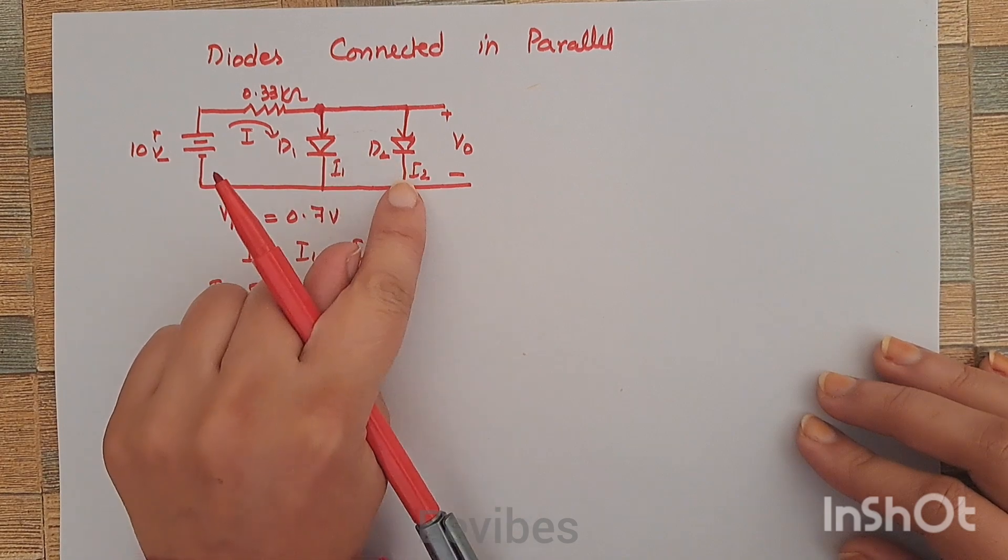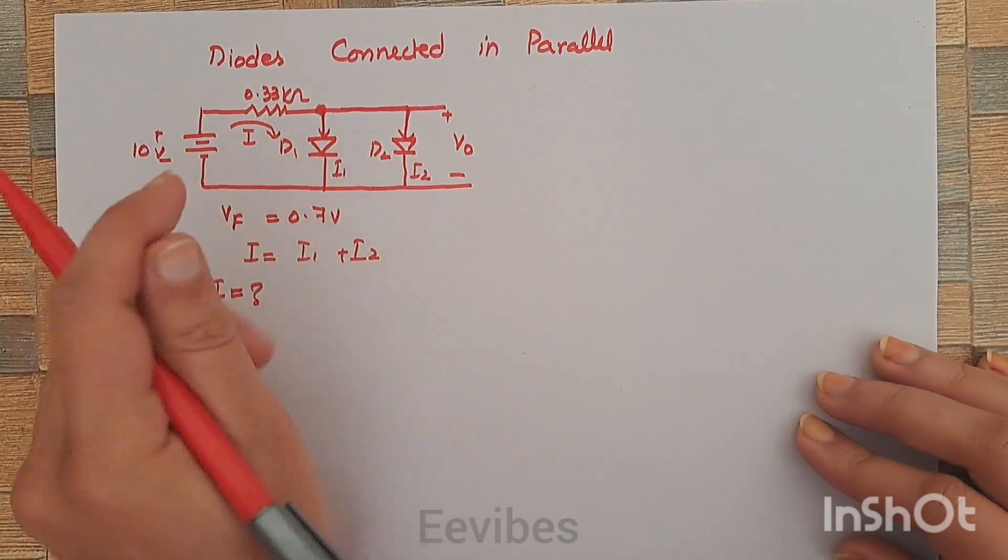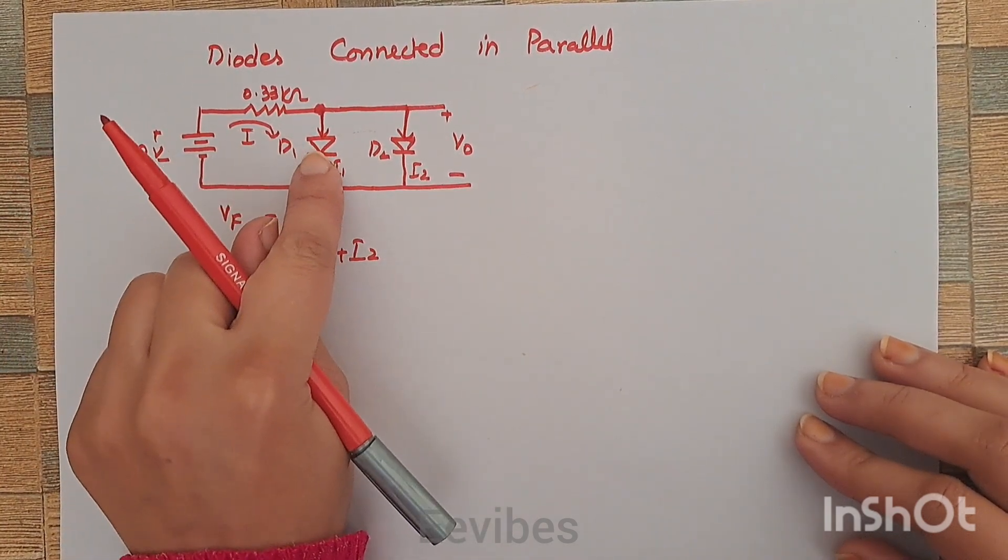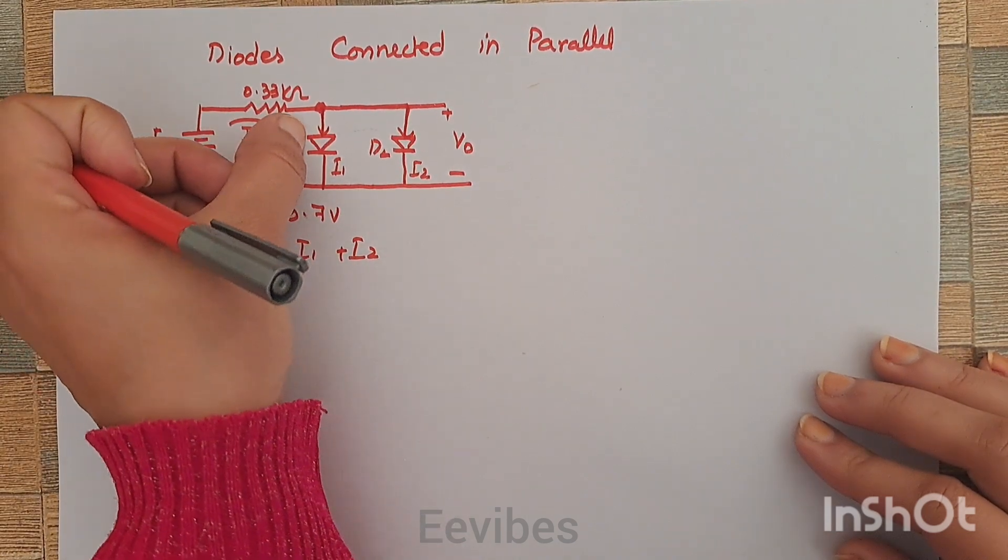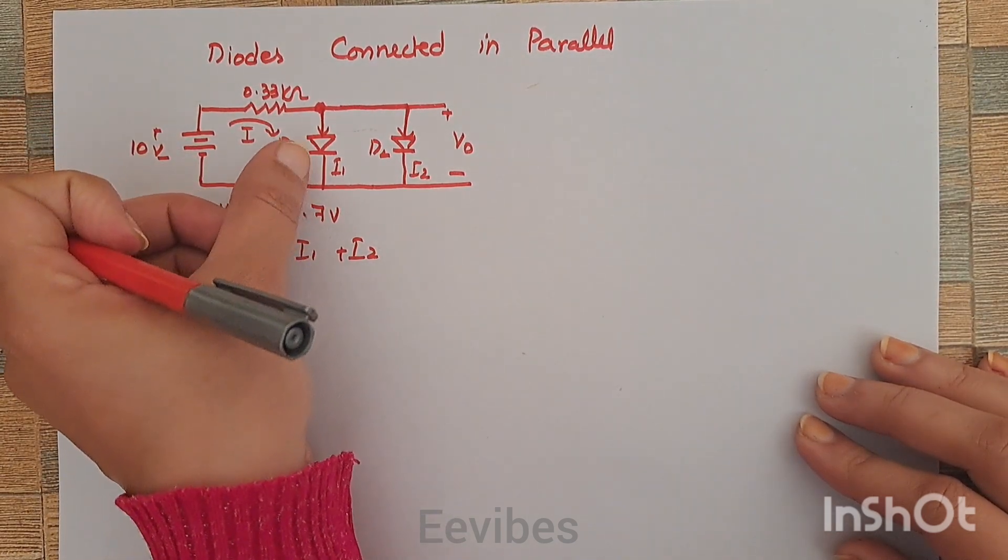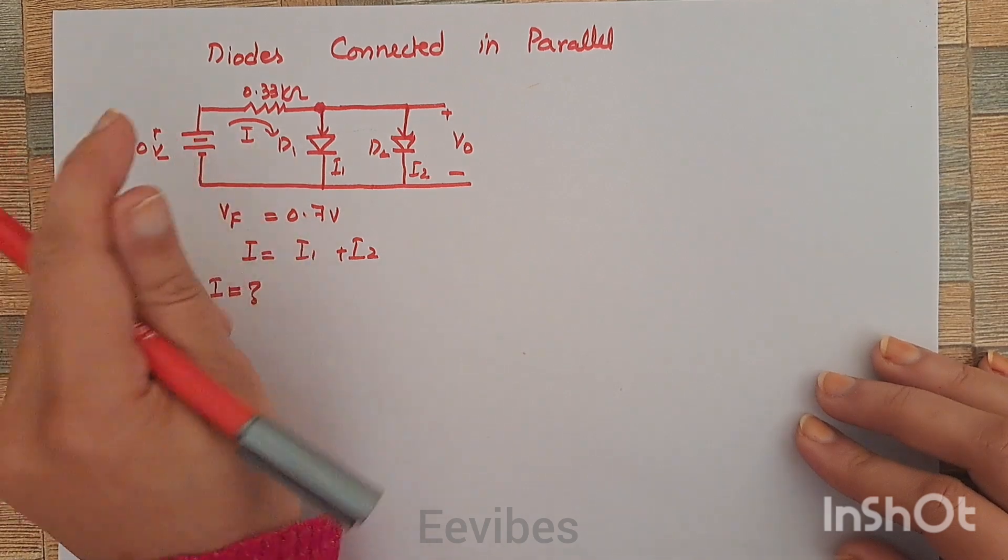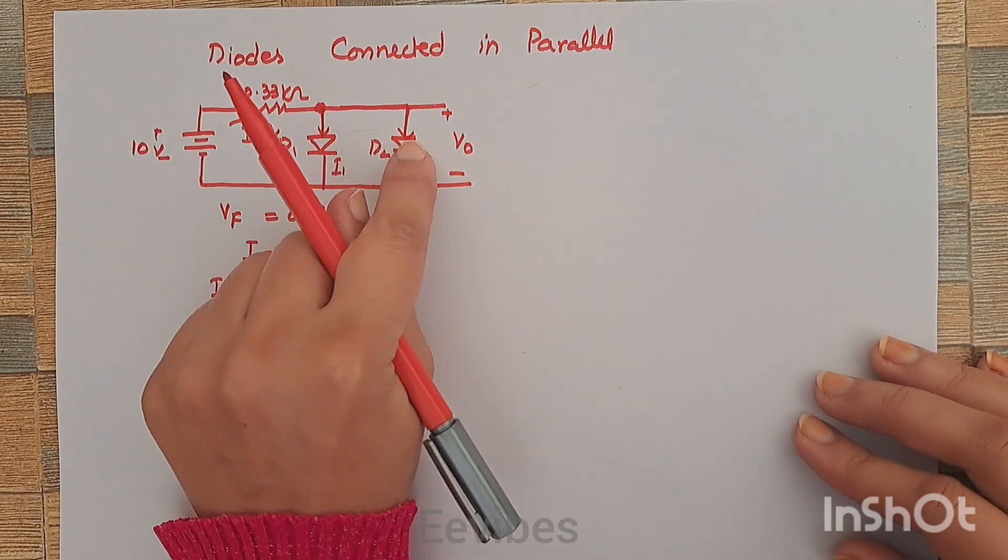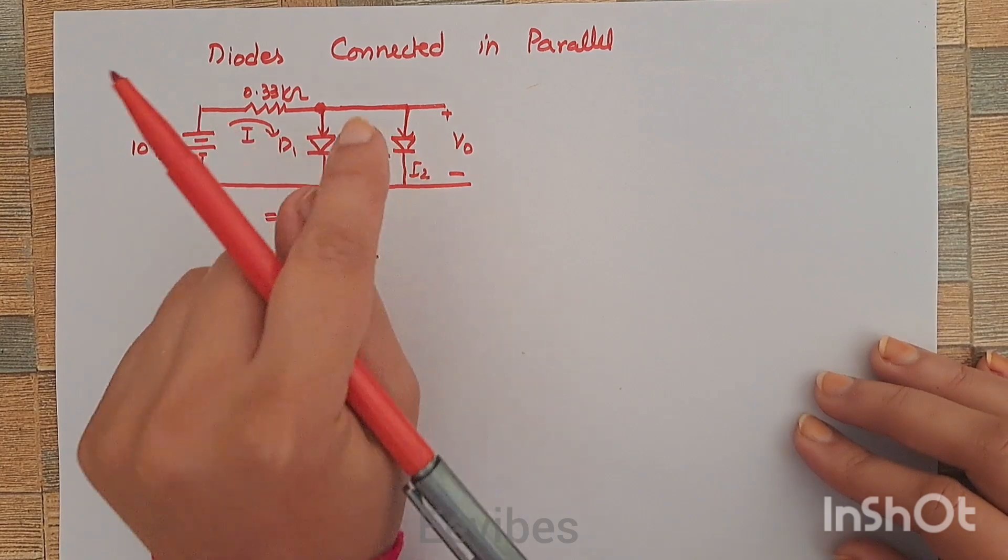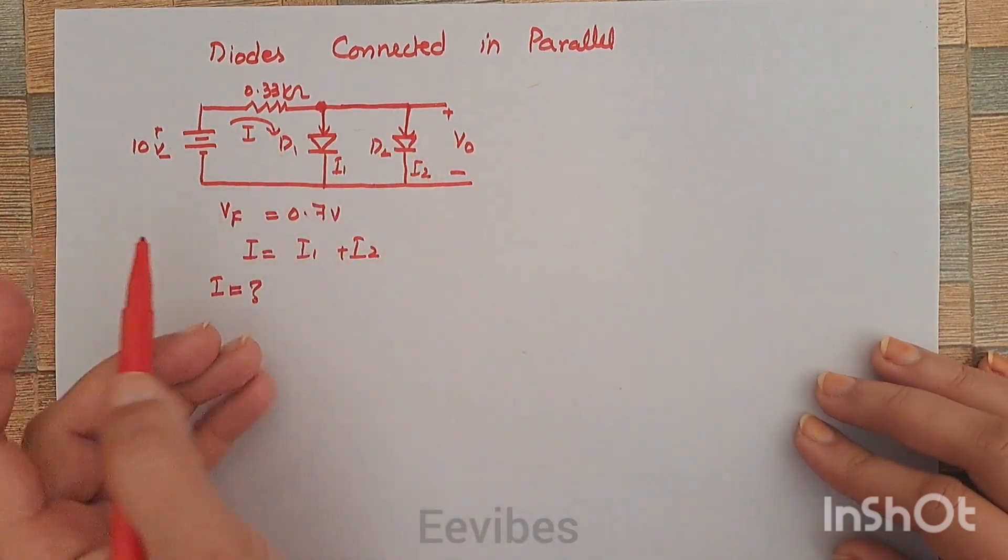Before that, we need to make sure or check which of these diodes is forward biased. The general rule of conduction for a diode is that the anode should always be at positive potential compared to the cathode. Since the plus 10 volt supply is connected at the anodes of both diodes, both will be forward biased.